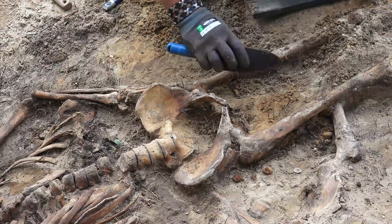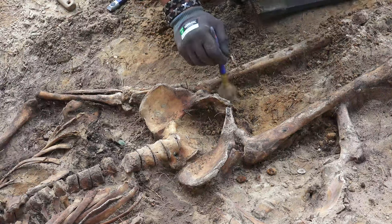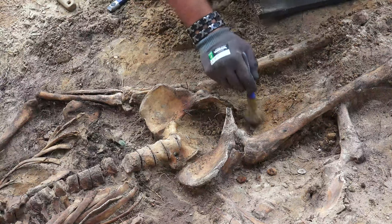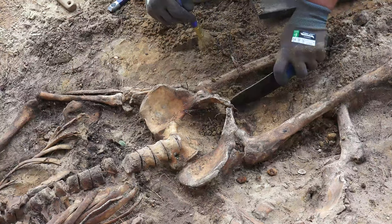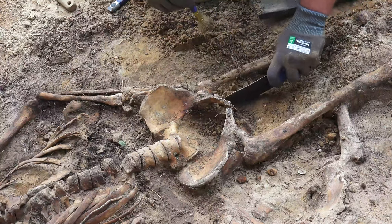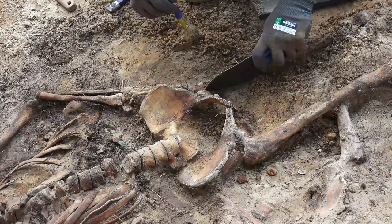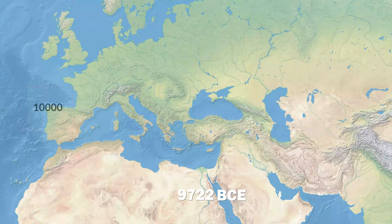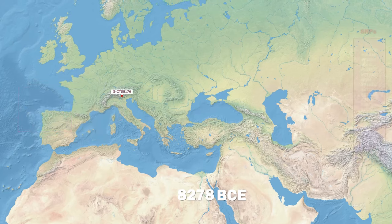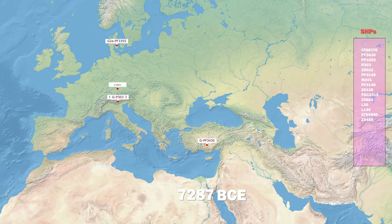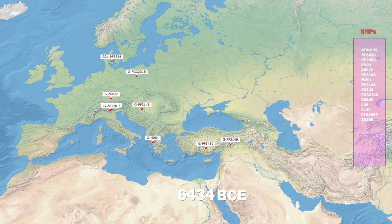From 10,000 BCE to 1 BCE, the areas where bones with Haplogroup G were found are mapped. Among the labels displayed on the screen, the left side is the haplogroup, and the character following the dash is the SNP. First, let's look at sites believed to contain remains from 10,000 to 6,000 BC. The box on the right side of the screen displays G's SNPs discovered during this period.